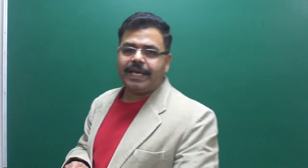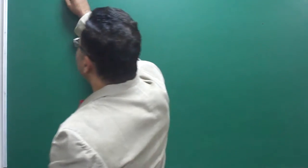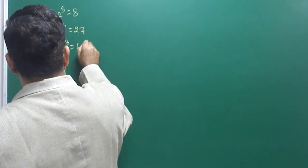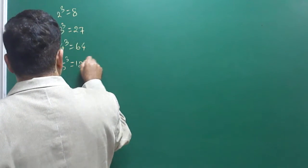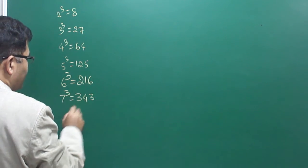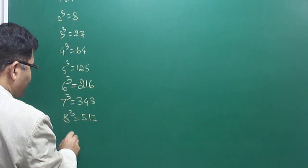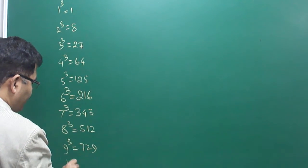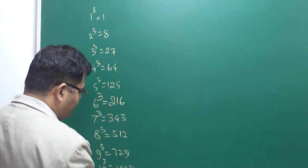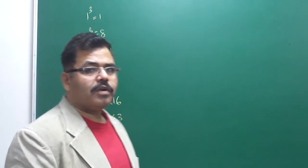First of all, you must remember the cubes of several numbers. This is general practice: 1³ = 1, 2³ = 8, 3³ = 27, 4³ = 64, 5³ = 125, 6³ = 216, 7³ = 343, 8³ = 512, 9³ = 729, 10³ = 1000, 11³ = 1331, and so on.